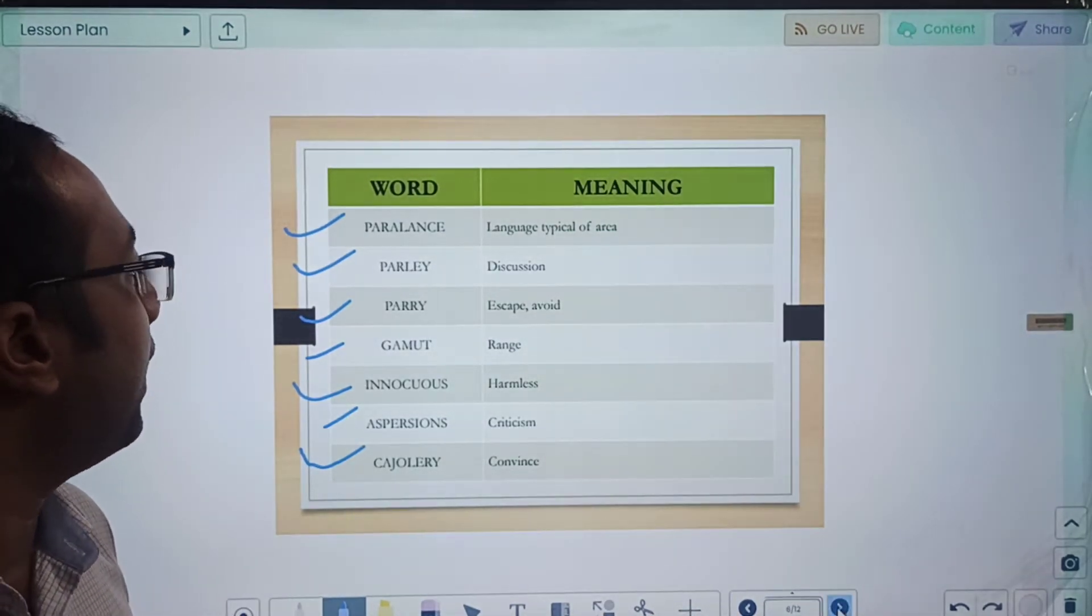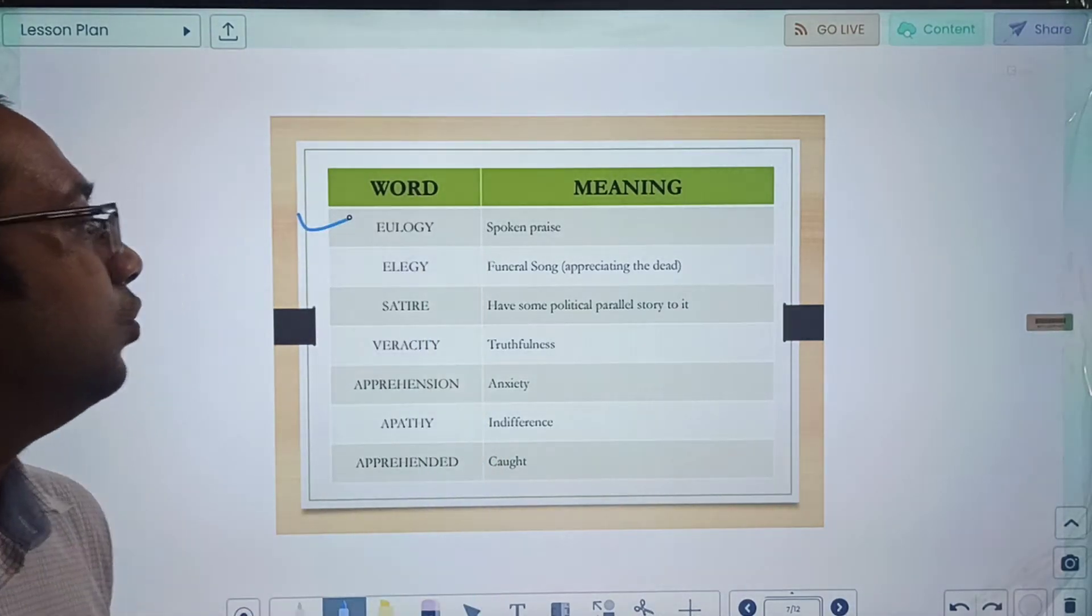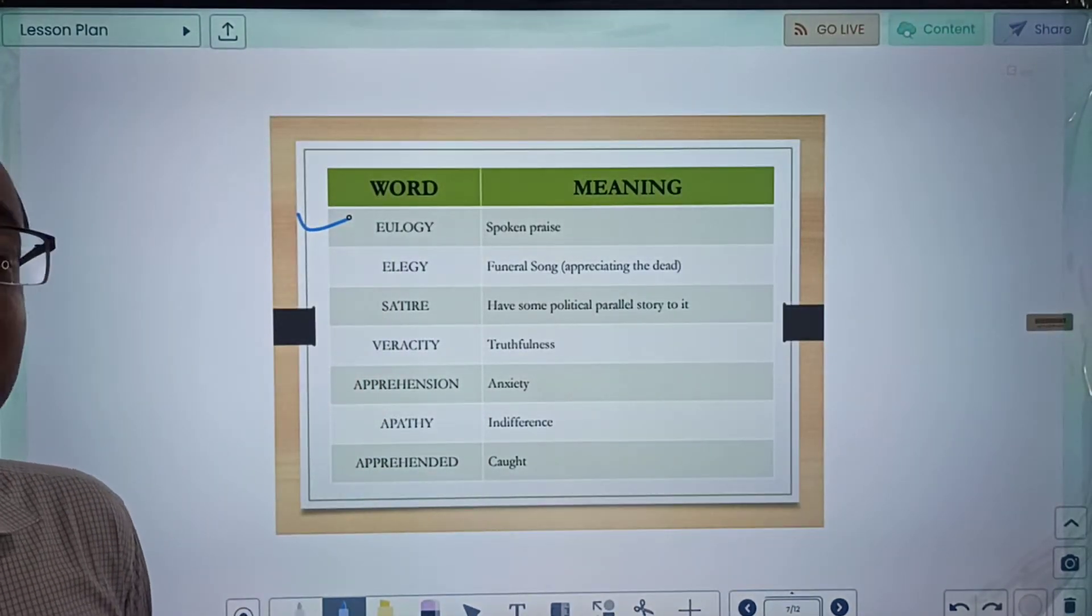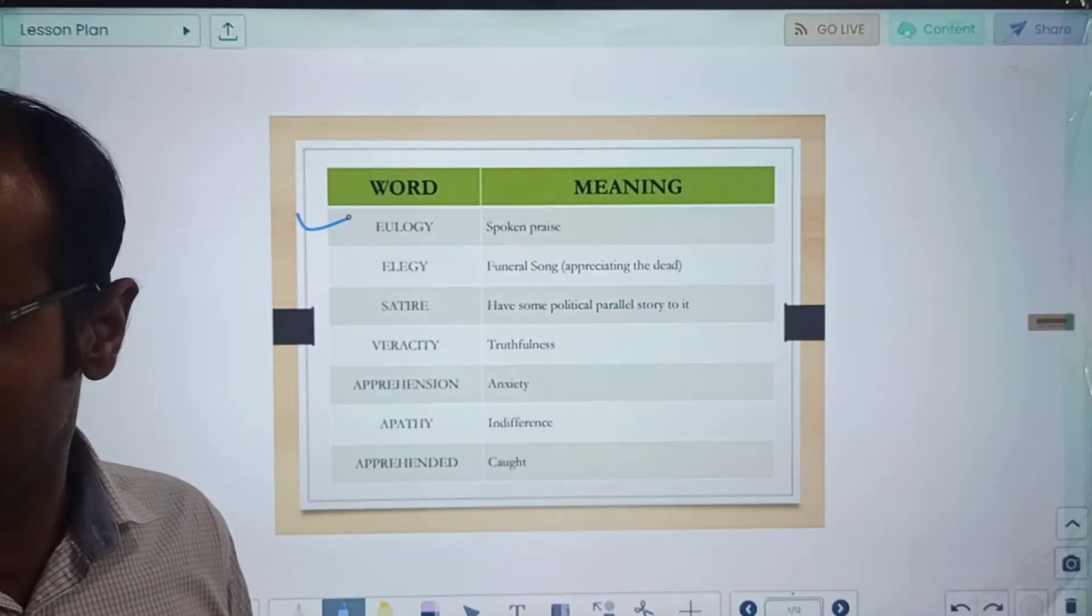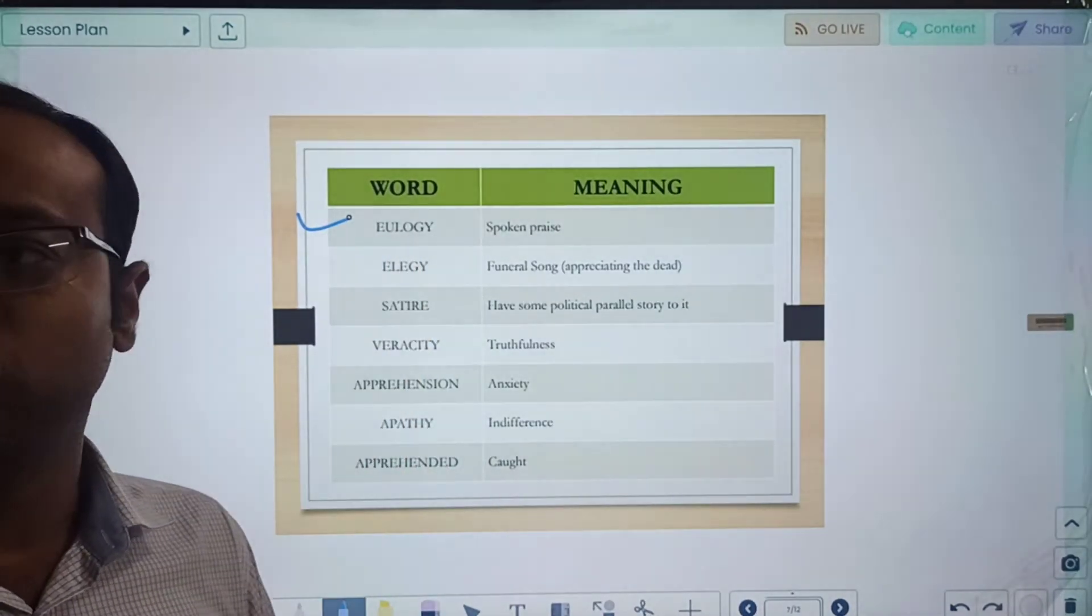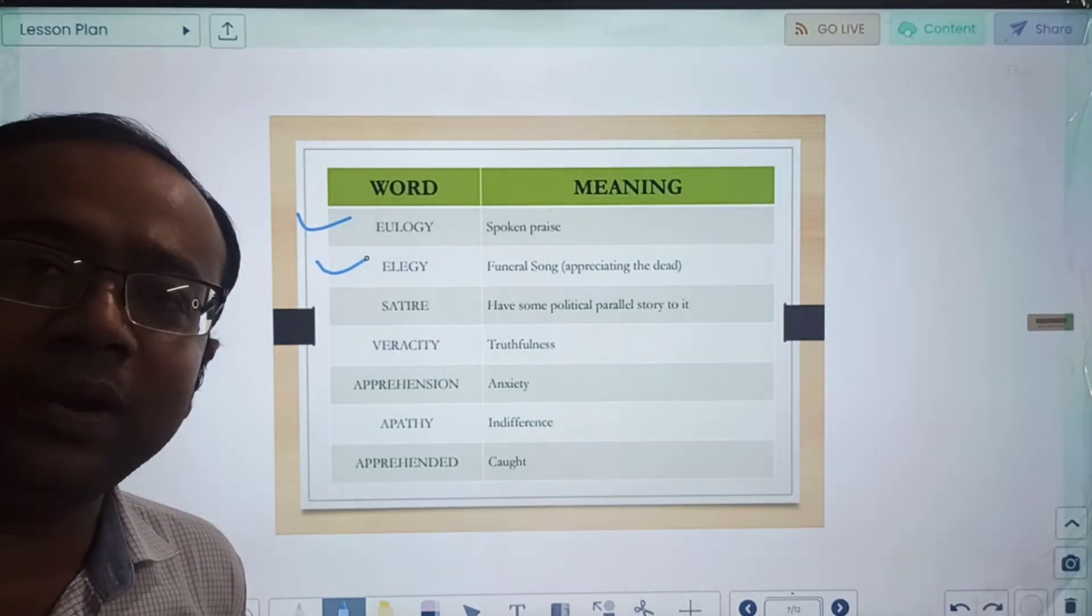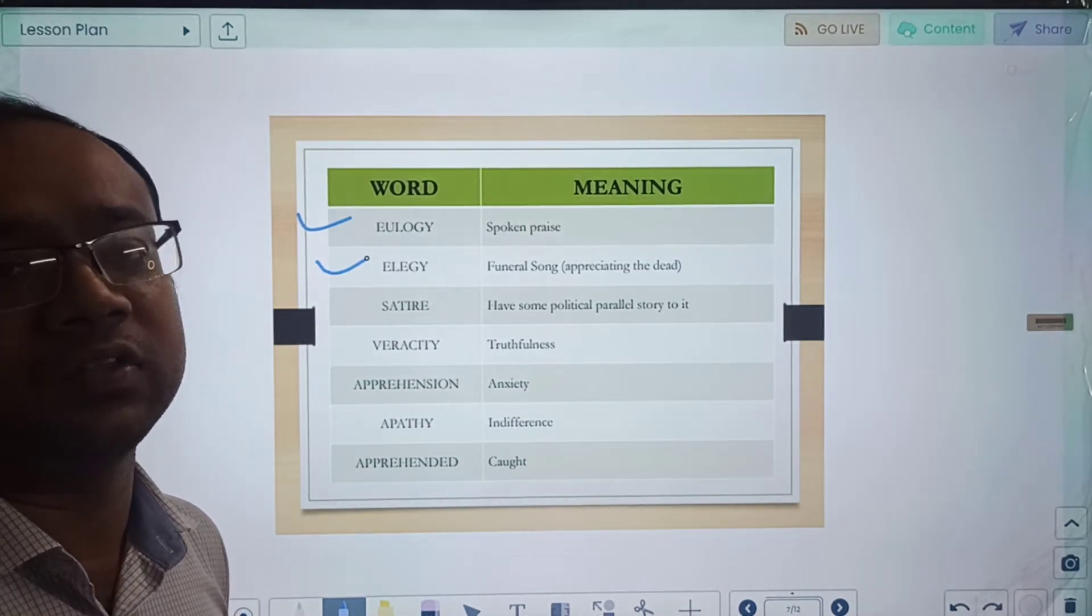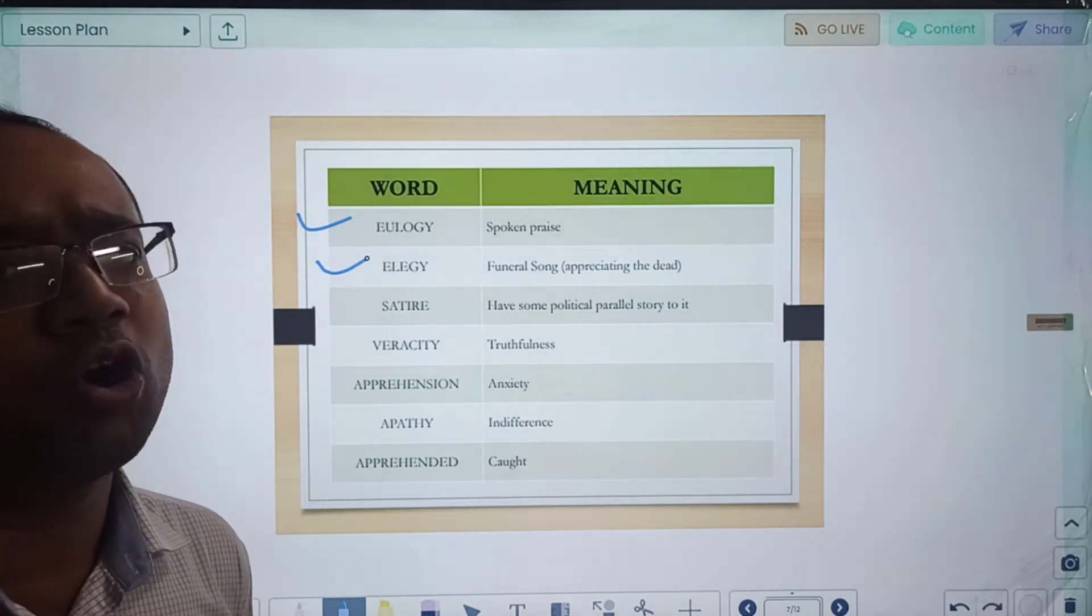In our next set, first is eulogy. Eulogy basically means spoken praise. Earlier in times of kings, in the raj darbar some singer would come and sing about the entire journey, from childhood to the reign to the various victories that king has done. That spoken praise which is not written but rather verbal is known as eulogy. Elegy means funeral song. Eulogy was appreciating a live person, elegy is a funeral song to appreciate the dead.